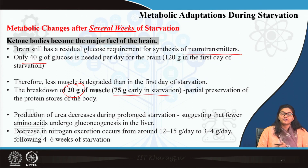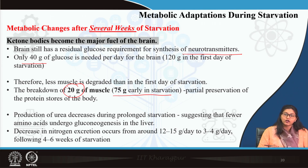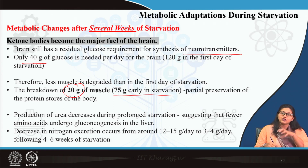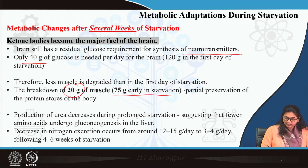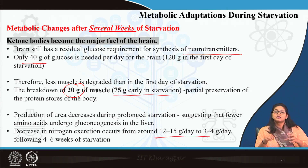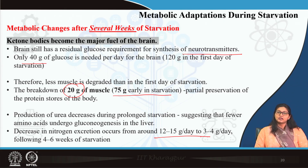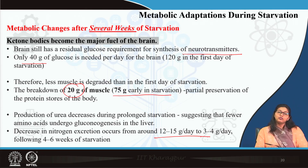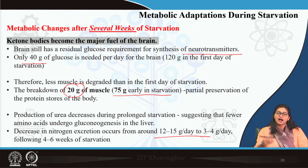When proteolysis decreases, deamination also decreases, so urea excretion also decreases — nitrogen excretion falls from 12 to 15 grams per day to just 3 to 4 grams per day. This is the metabolic adaptation after several weeks of starvation. The body can maintain this state for around 45 days to 3 months; after that, body proteins are depleted by 40 to 60 percent, which causes death.